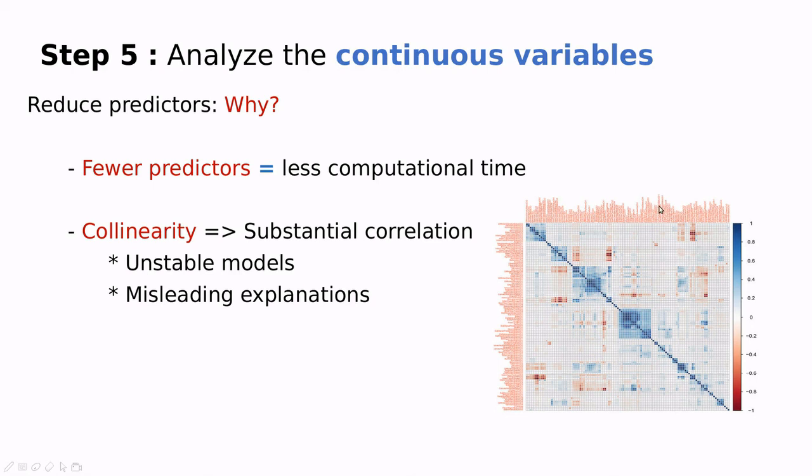Another problem with continuous variables has to do with correlations. Sometimes you have tons of continuous variables, and we want to reduce the number of features. Fewer features produce faster computations. The other thing is that sometimes you have collinearity. Collinearity means that, for instance, if you have something which is dark blue in this correlation diagram or dark red here, that means those parameters are highly correlated. For instance, here you have this feature and this one that are highly correlated. The problem with that is if you include all of the features and do not correct for this correlation, you're going to have unstable models and misleading explanations, because you could be attributing some explanation to this variable when maybe this variable is there because it's something like that.